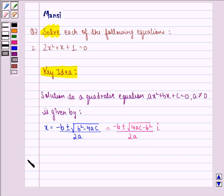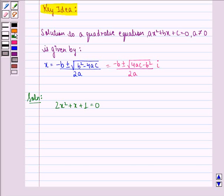Now we start with the solution to this question. The equation given to us is 2x² + x + 1 = 0. So b² - 4ac = 1² - 4(2)(1) = -7.